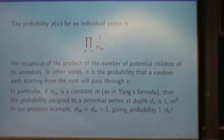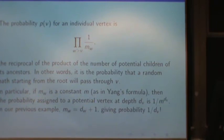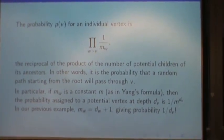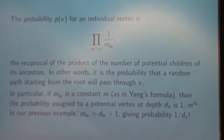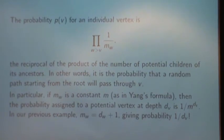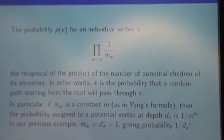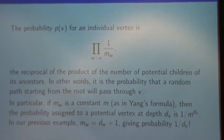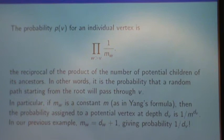In particular, this formula is nice if Mw is a constant, as in Yang's formula, then the probability of going to a potential vertex at depth d sub v is 1 over M to the d sub v. And in our previous example, where Mw was d sub v plus 1, that gave the probability as 1 over d sub v factorial.